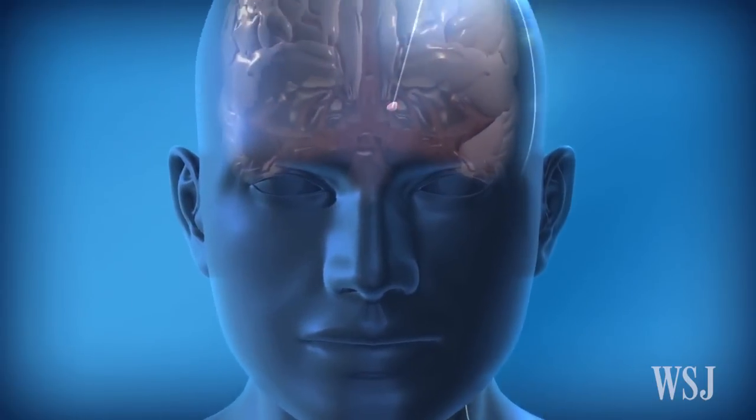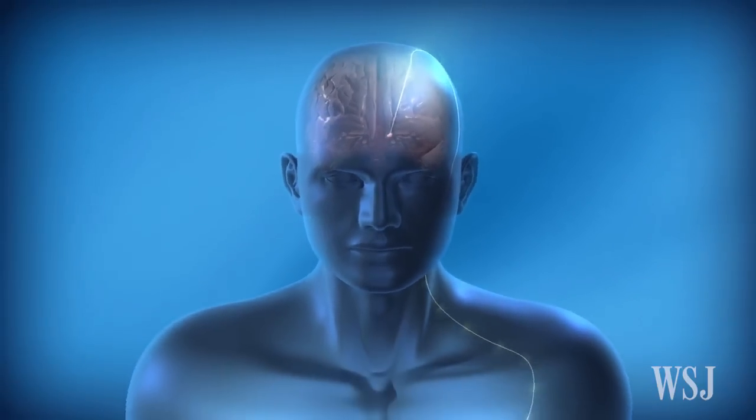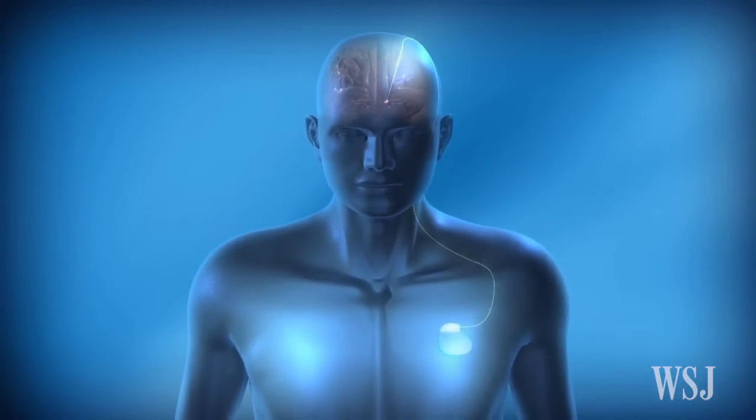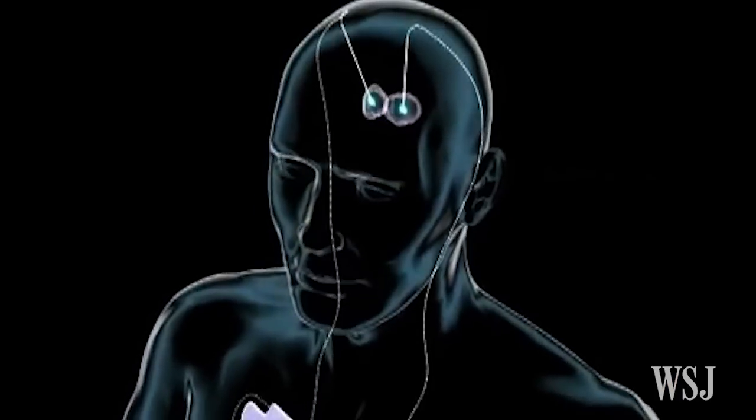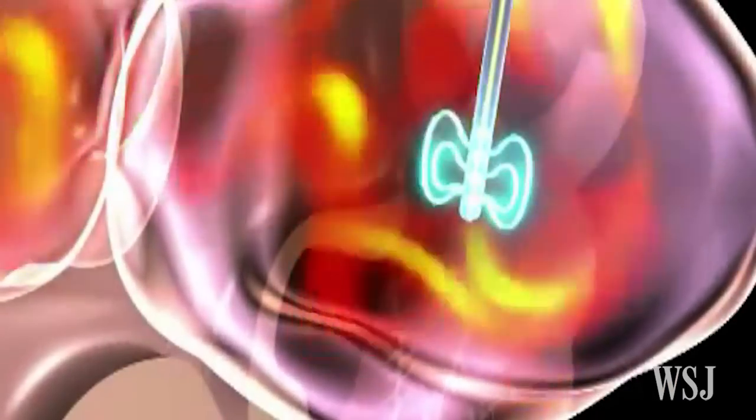Deep brain stimulation, or DBS, is designed to use electrical currents to target abnormal brain activity. The method triggers blood flow and a series of chemical reactions that leads to the release of neurotransmitters. Together, these actions help correct malfunctioning connections in the brain.